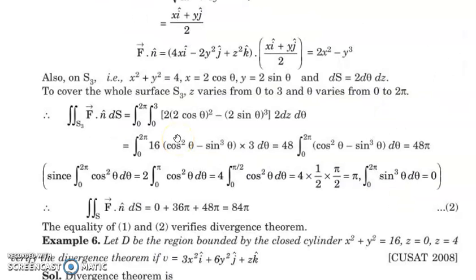We have obtained all three integrals: along S1 it is 0, on S2 it is 36pi, and on S3 it is 48pi. Adding them all gives 0 plus 36pi plus 48pi equal to 84pi, which is the same as the triple integral value. Therefore, the divergence theorem is verified.